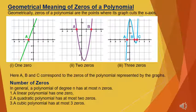To quickly revise: if we have a straight line in graphical representation, it is a linear polynomial and has exactly one zero. In the second graph, the parabola represents a quadratic polynomial, which has at most two zeros. In the third graph, the curve represents a cubic polynomial, which has at most three zeros.